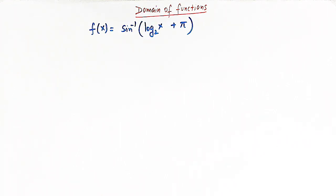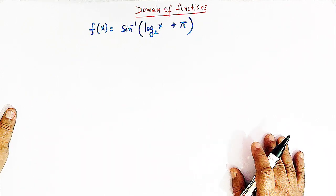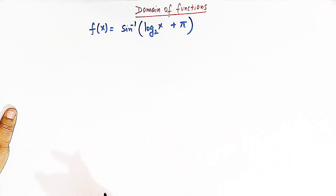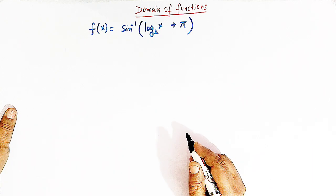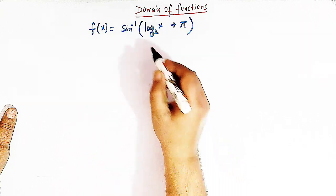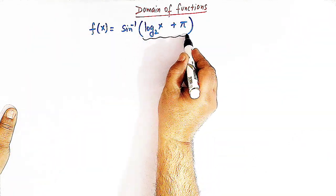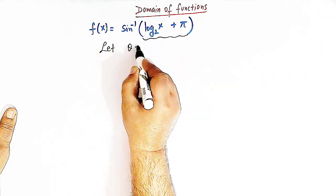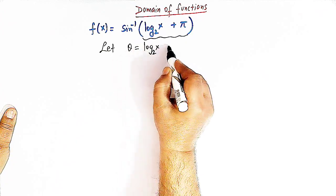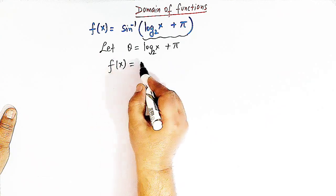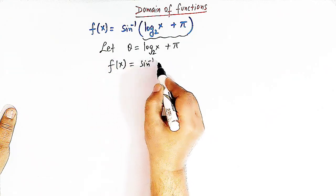This is a very easy problem and in order to get the domain of this function we have some simple concepts. We can easily apply the concepts and arrive at the domain of this function. So let us take this quantity as theta. If we assume theta is equal to log of x to the base 2 plus pi, then our function assumes the form sin inverse theta.